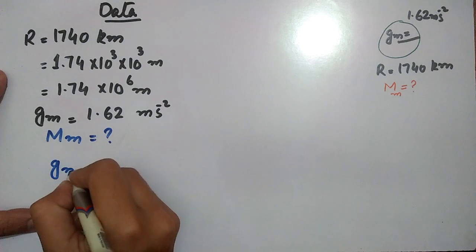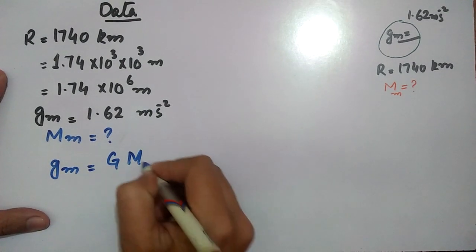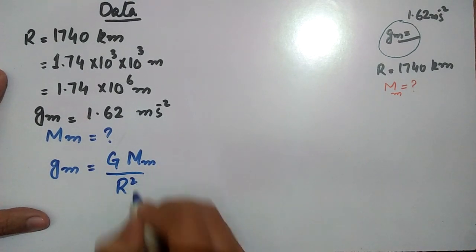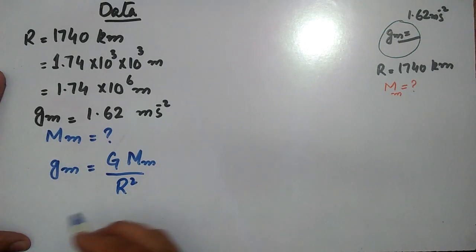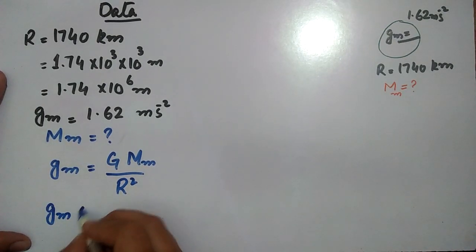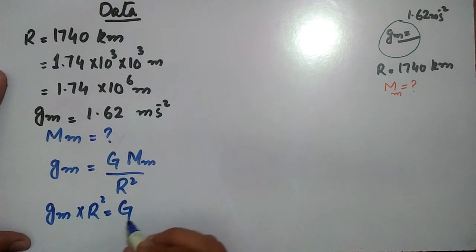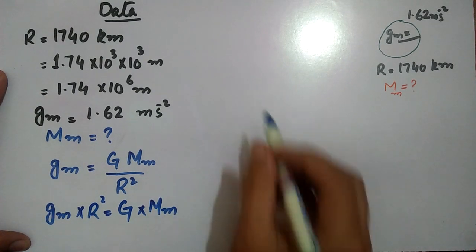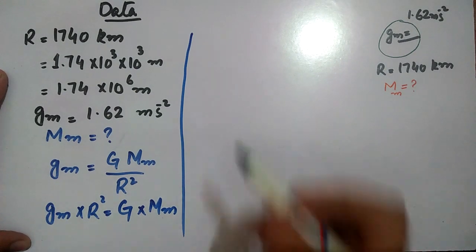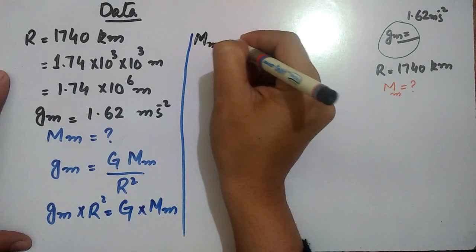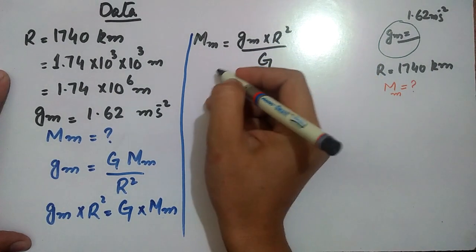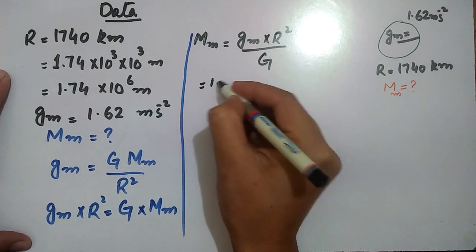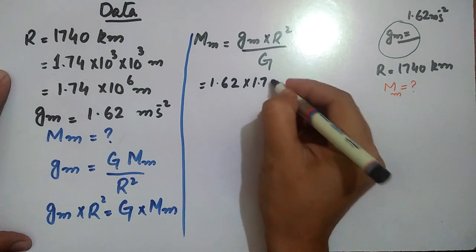The formula we will use: g = GM/r², where G is the gravitational constant and M is the mass of the moon. Multiplying both sides by r²: g × r² = G × M. Therefore, mass of moon = g × r² divided by gravitational constant G.